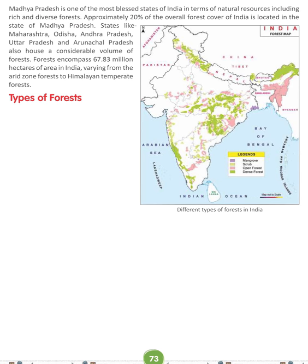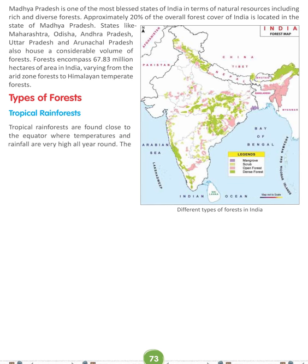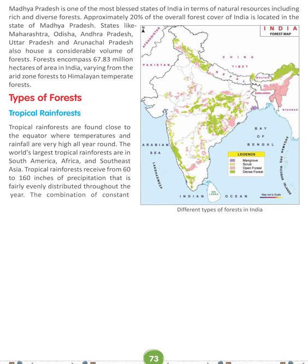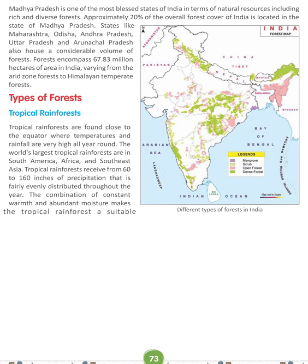Different Types of Forests in India. Tropical Rainforests are found close to the equator where temperatures and rainfall are very high all year round. The world's largest tropical rainforests are in South America, Africa, and Southeast Asia. Tropical rainforests receive 60 to 160 inches of precipitation, evenly distributed throughout the year. The combination of constant warmth and abundant moisture makes the tropical rainforest a suitable environment for many plants and animals.